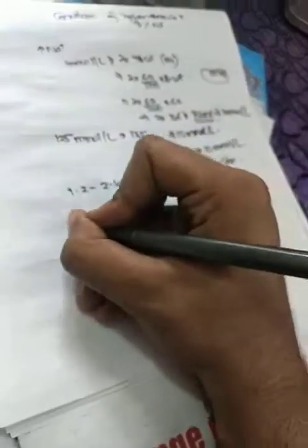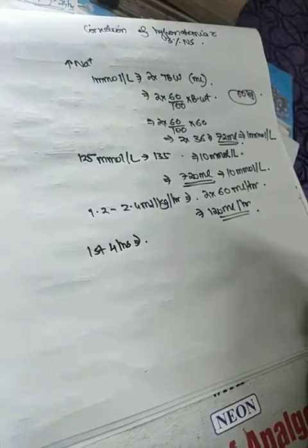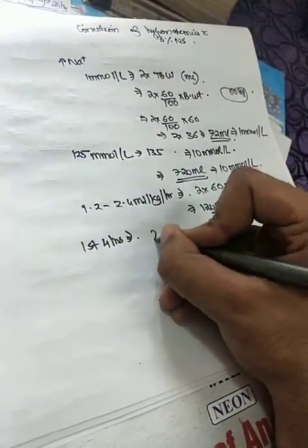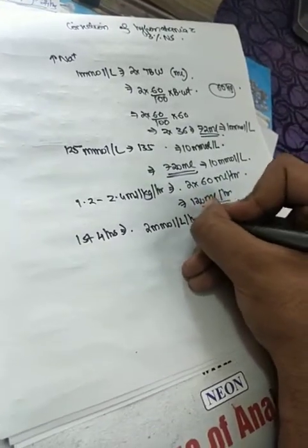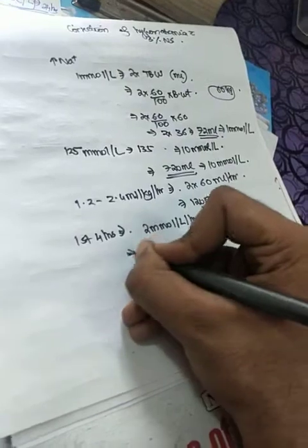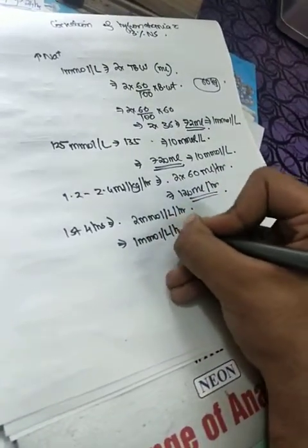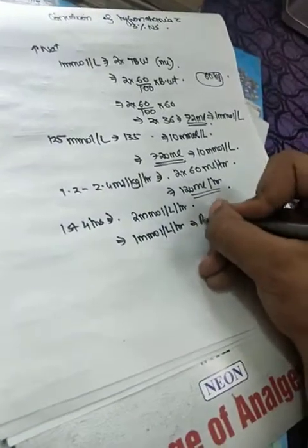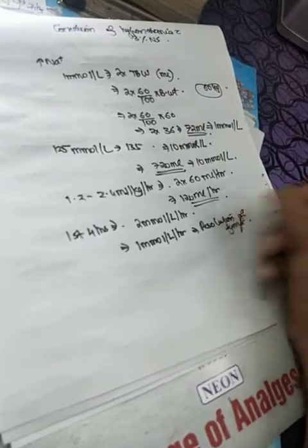But for correction, it is recommended that in the first 4 hours you should give a maximum of 2 millimole per liter per hour correction, and afterwards you have to give it at 1 millimole per liter per hour till there is resolution of symptoms.